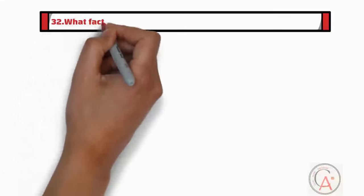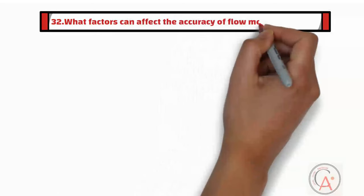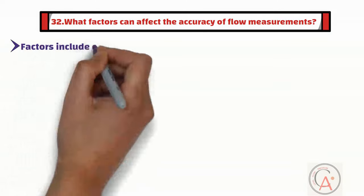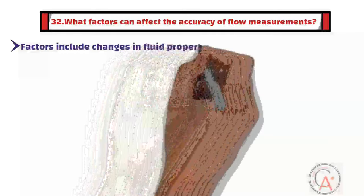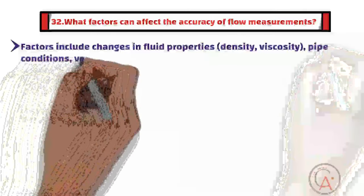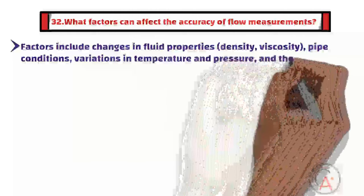The thirty-second question is: what factors can affect the accuracy of flow measurements? Factors include changes in fluid properties such as density and viscosity, pipe conditions, variations in temperature and pressure, and the condition of the flow measurement device.